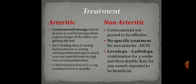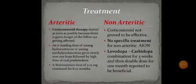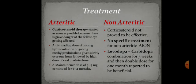The treatment of arthritic AION is corticosteroid therapy, started as soon as possible due to the higher risk of the fellow eye being affected. We start with 200 mg hydrocortisone IV, taper the dose as ESR falls, and continue a maintenance dose of 5 to 15 mg for 6 to 12 months. As non-arthritic AION has no inflammatory cause, corticosteroids are not effective. There is no specific treatment, but levodopa-carbidopa combination for 3 weeks followed by double dose for 1 month has been reported to be beneficial.